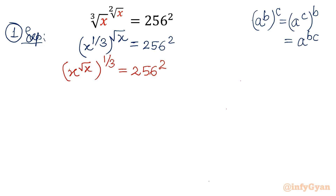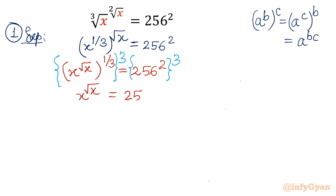Now I will raise both sides to the power 3. Once I do that, the left hand side will be x raised to square root x equal to 256 squared — because this 3 and the 1 over 3 will cancel out.